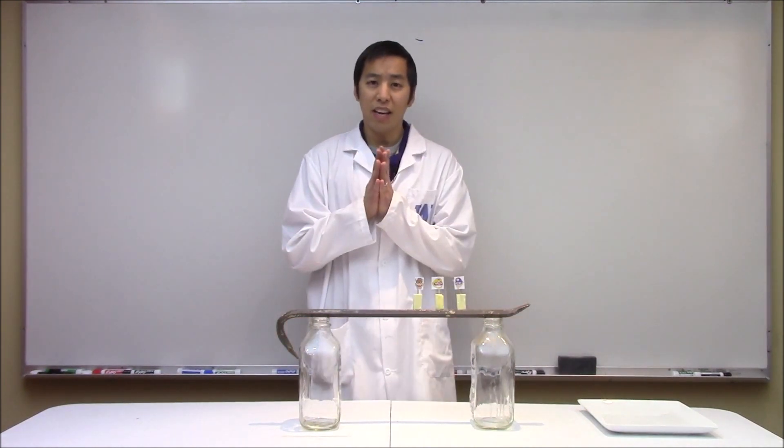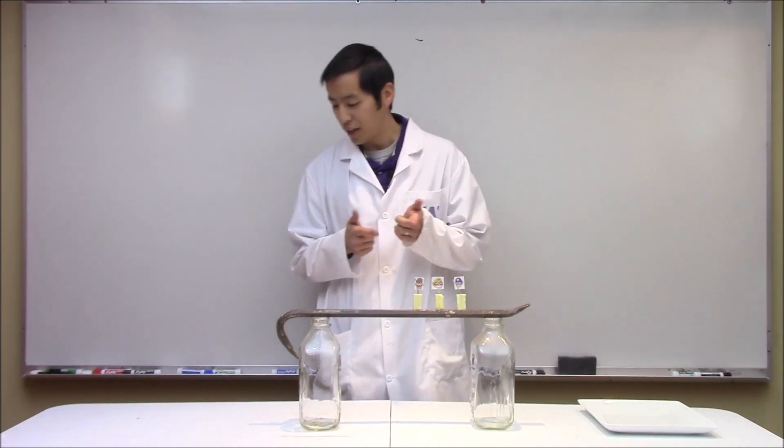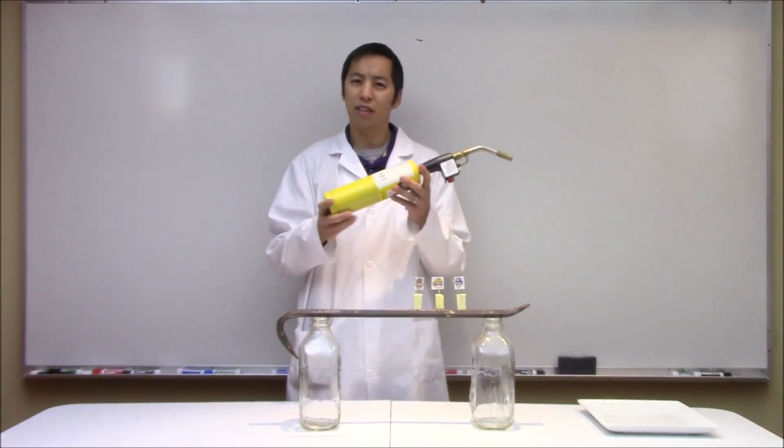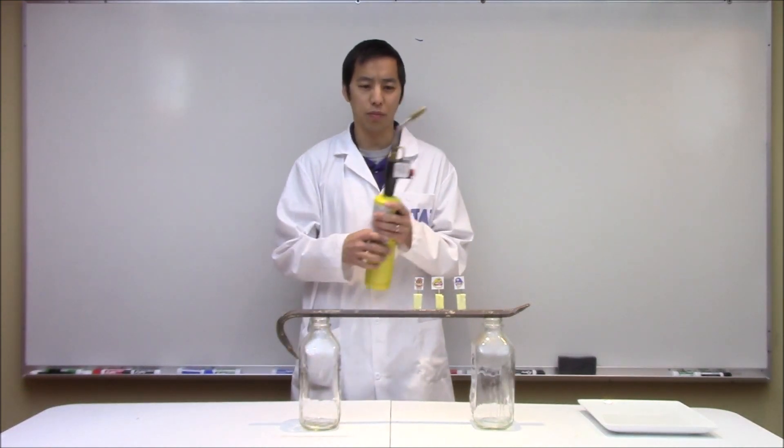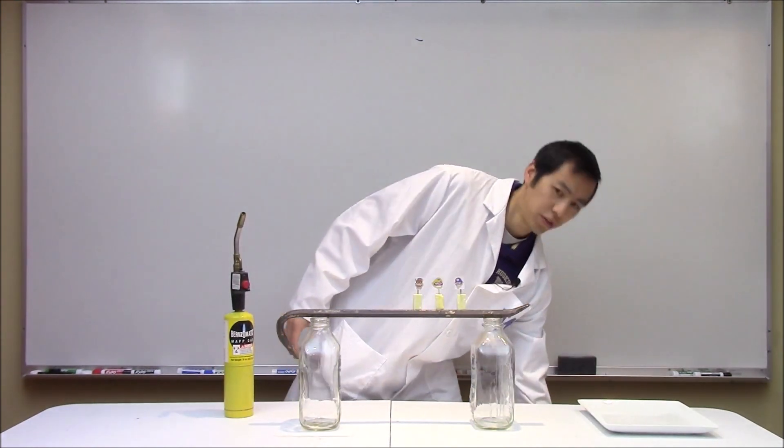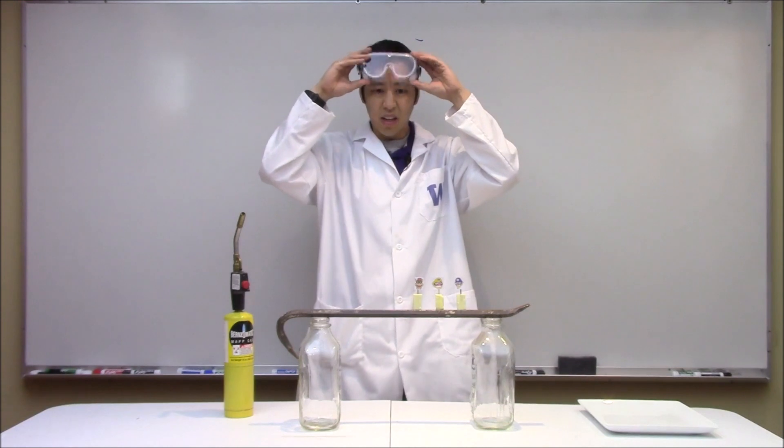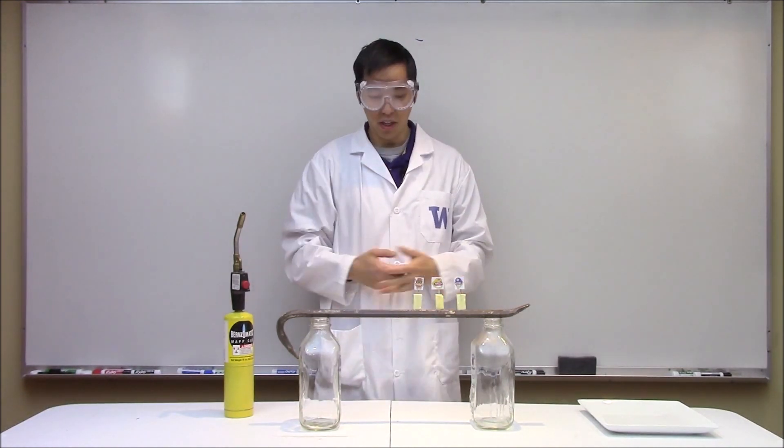Now to introduce a temperature gradient, why don't we go ahead and use this 2,000 degrees Celsius MAPP gas torch here. Maybe before I do that, I better put on some safety goggles. And let's just go ahead and start heating up this bar.